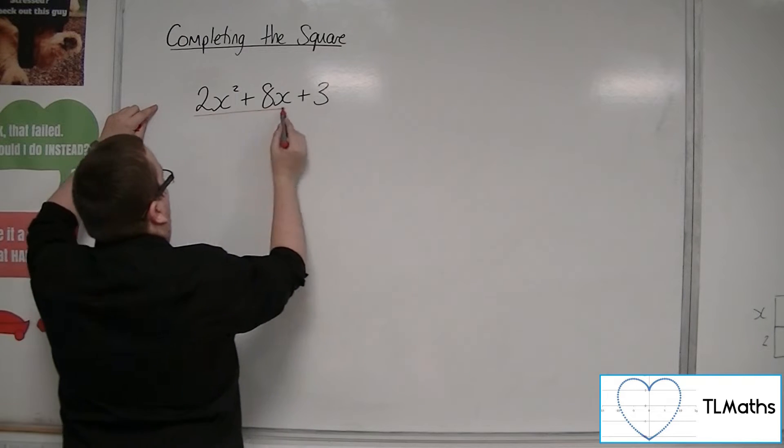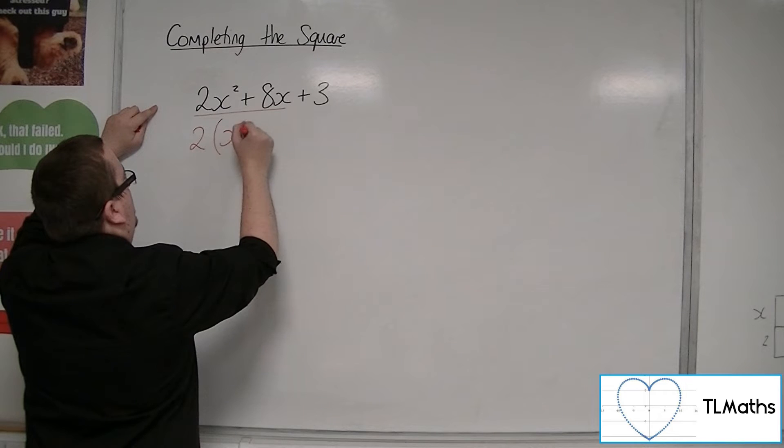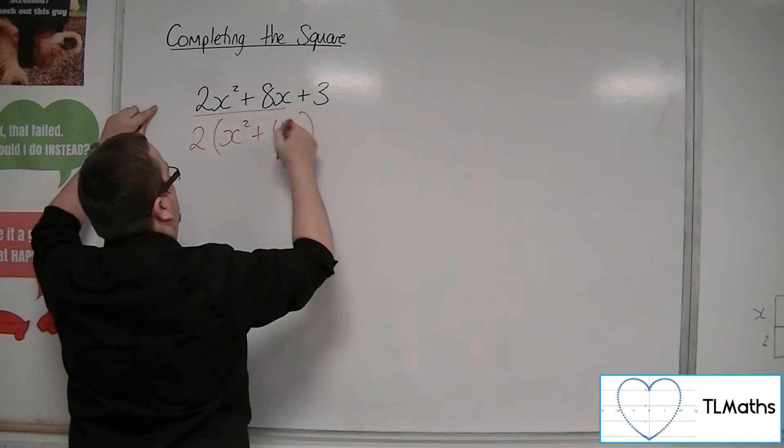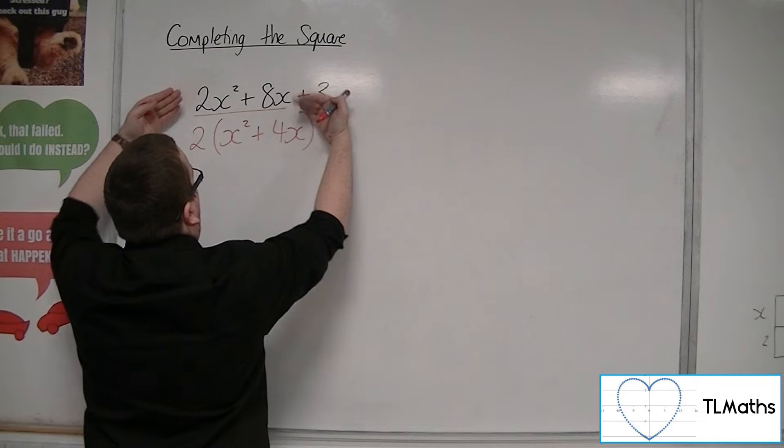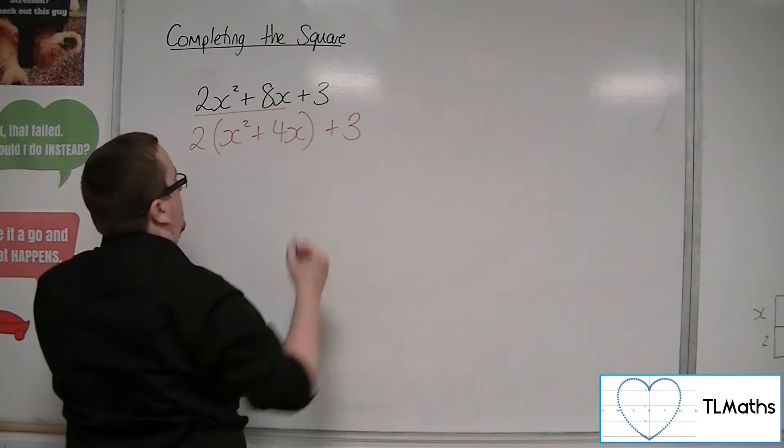So I will write this as 2 lots of x squared plus 4x. That is the same as that. And then we've got this plus 3 sticking on the end.